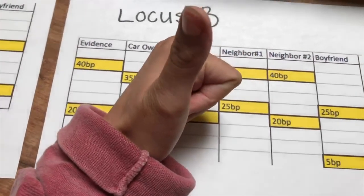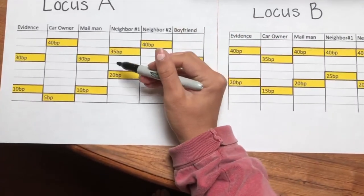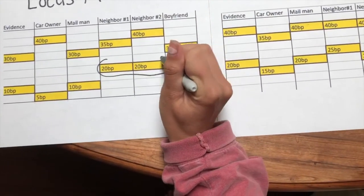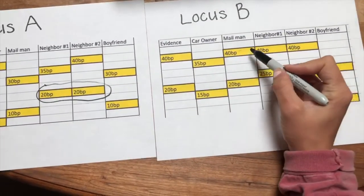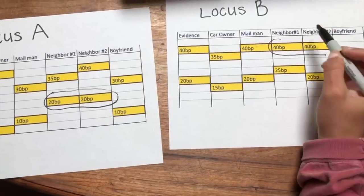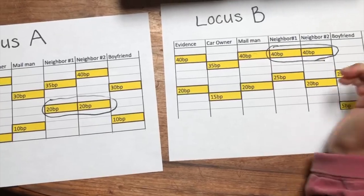Aside from the crime, we notice something else that the data hints to, which is that neighbor number one, the woman, is most likely the mother of neighbor number two, the 20-year-old male. How we came to this conclusion is that at each of the loci tested, the two of them had one common fragment. This can indicate paternity because one allele from each parent is passed on to their child. Therefore, each parent will share one similar fragment to their child when a DNA fingerprint is made. Now you see how we use DNA fingerprinting to help correctly identify criminals and also conduct paternity tests.